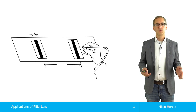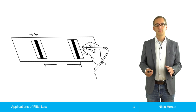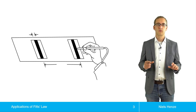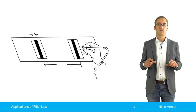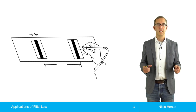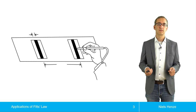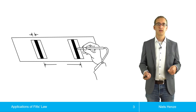In the original study by Paul Fitts, one apparatus he used consisted of two metal bars and a stylus, and participants had to go with the stylus from one metal bar to the other.